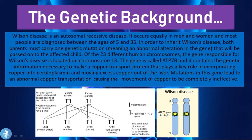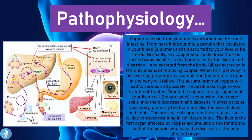If both parents are healthy carriers, they can give birth to a child who is completely healthy with no abnormal genes, a child who is a carrier, or a child who is affected with Wilson's disease. This is because Wilson's disease is autosomal recessive — having one broken gene means you are only a carrier, but having two abnormal ATP7B genes means you will develop the disease.